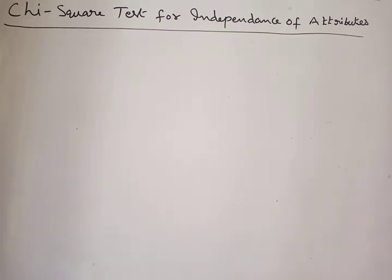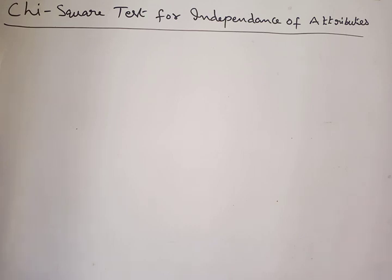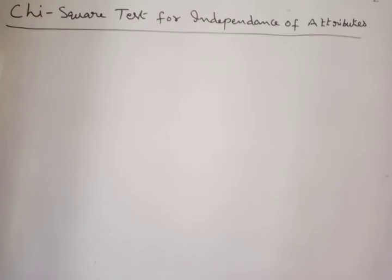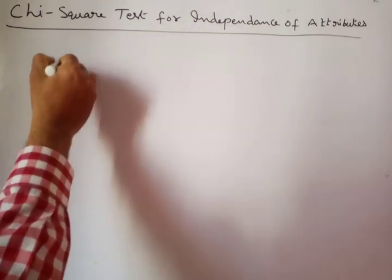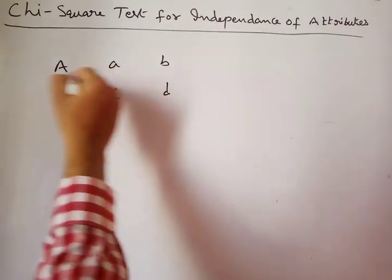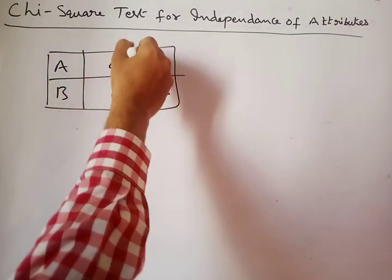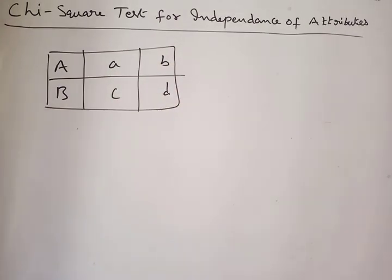When we have to use the chi-square test for independence of attributes, it means when the data is given in rows and columns — when two attributes are divided into two classes. In that case we use this chi-square test for independence of attributes. For example, we have a 2×2 table with values a, b, c, d, which are the observed frequencies.